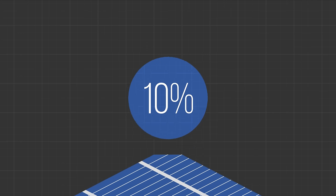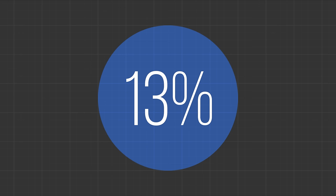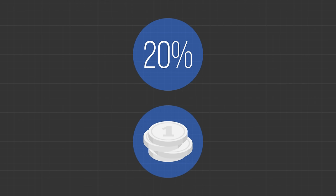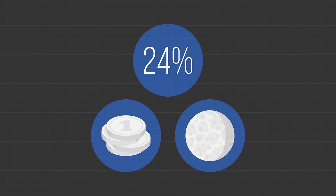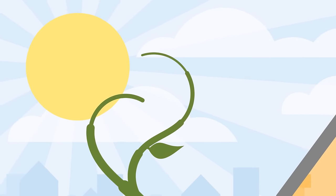Future challenges include improving the efficiency by which a solar cell converts sunlight to electricity and making solar energy cheaper. Of course, solar cells produce electricity only during the day. So, storing the electricity efficiently for use during nighttime is another important challenge. Advancements in solar technologies present the potential to power our lives if we just leave it to the sun.